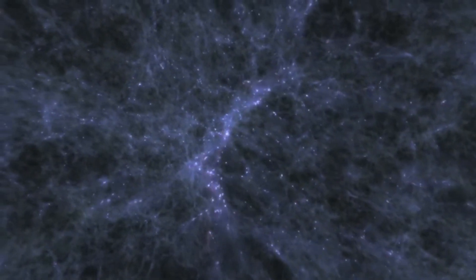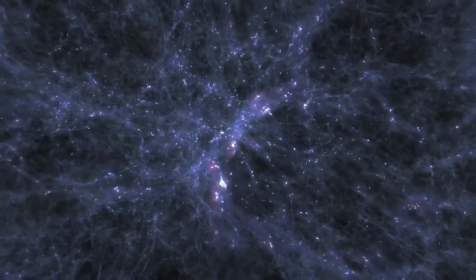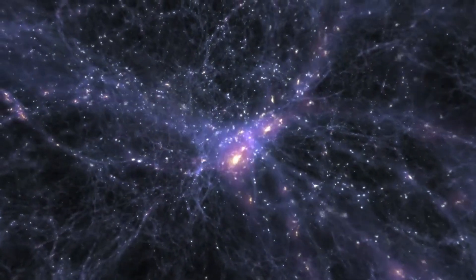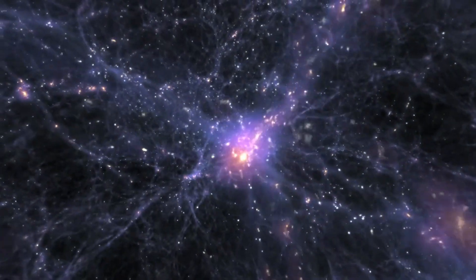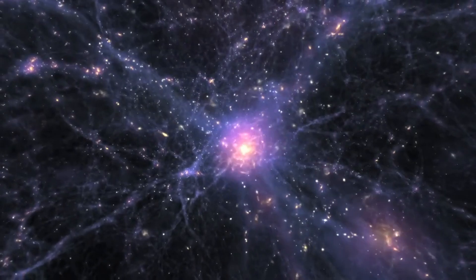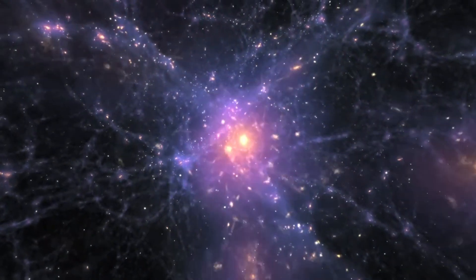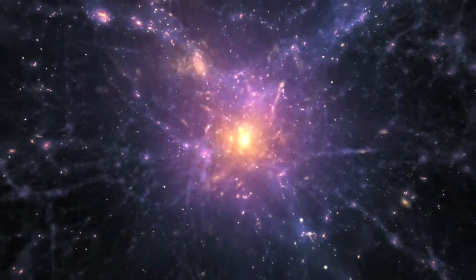What began as tiny differences in matter density on the smallest scale turned into regions of higher and lower matter density in the modern universe. Thus, 13.8 billion years after the Big Bang, we see how microscopic fluctuations at the beginning of time have transformed into the large-scale structure of the universe.